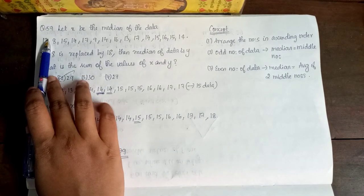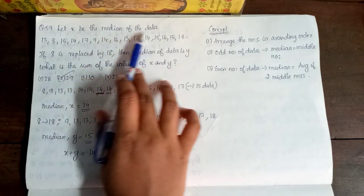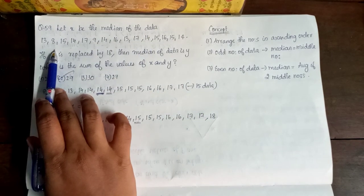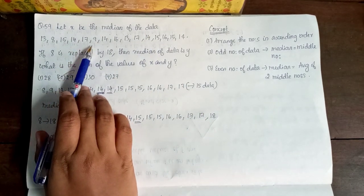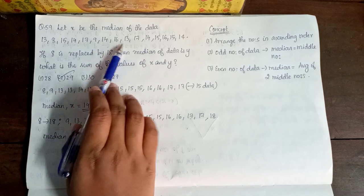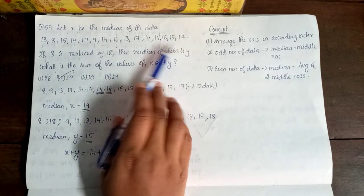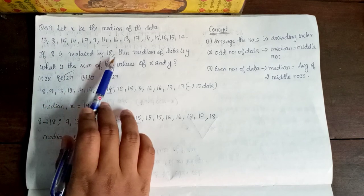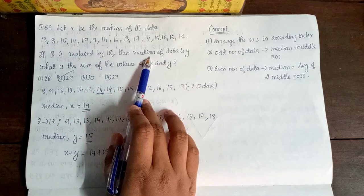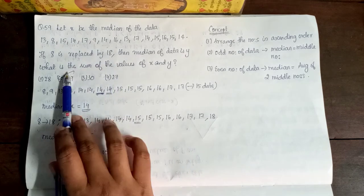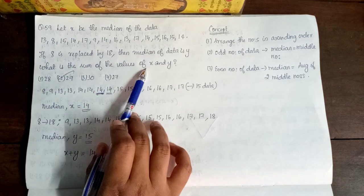Next question 59. Let x be the median of the data. 13, 8, 15, 14, 17, 9, 14, 16, 13, 17, 14, 15, 16, 15, 14. If 8 is replaced by 18, then median of data is y. What is the sum of the values of x and y?